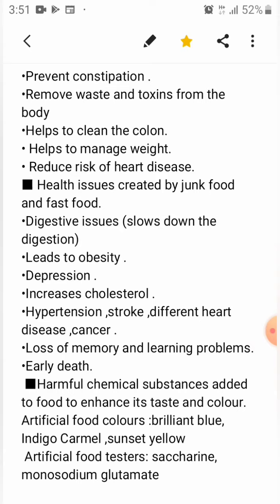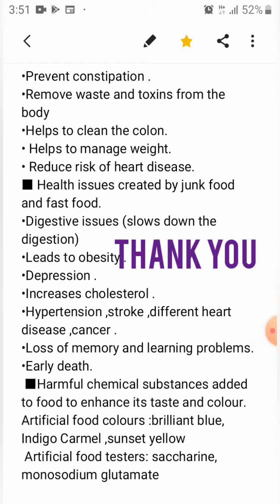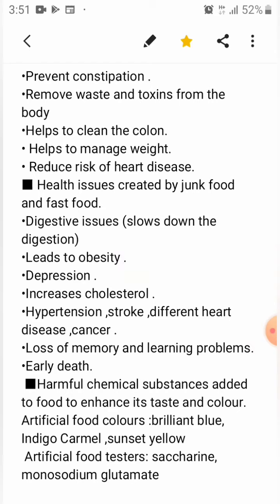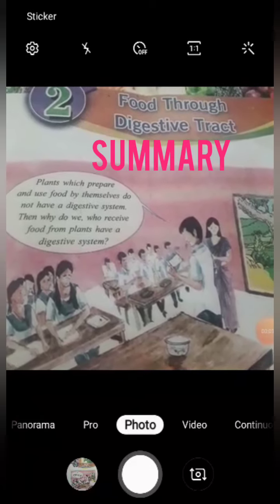The harmful chemical substances include artificial food colors and artificial food tasters. Brilliant blue, indigo, caramel, and sunset yellow are some examples of artificial food colors. Saccharine and monosodium glutamate are commonly used as food tasters, with monosodium glutamate mainly used as a flavor enhancer.